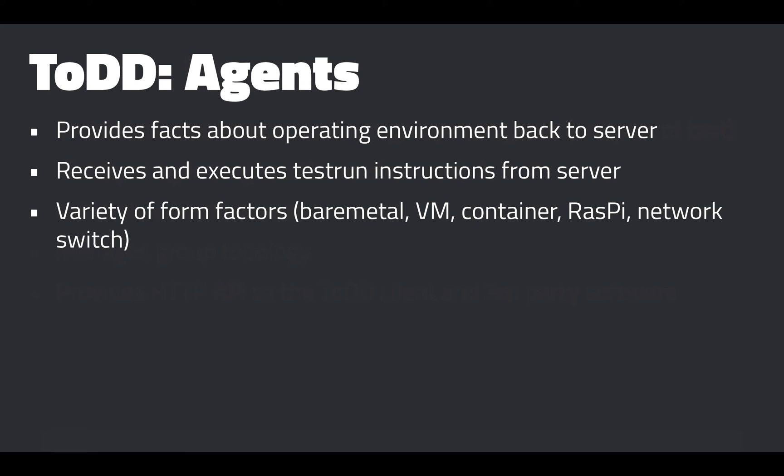Let's talk about TODD agents. Agents provide facts about their operating environment back to the server — they pop up on the network and advertise themselves, saying things like here's my hostname, here are the network interfaces I have, things of that nature. The TODD agent will also receive and execute test run instructions from the server. When the server orchestrates a test, it sends test run instructions to every single agent so the agents know what they need to do, and the agents locally run those instructions to manifest an actual test run. TODD agents come in a variety of form factors — it's really just a compiled binary written in Go, so as long as you compile it for your target platform, it should work fine. You could run this on a bare metal server, as a VM, or as a Docker container.